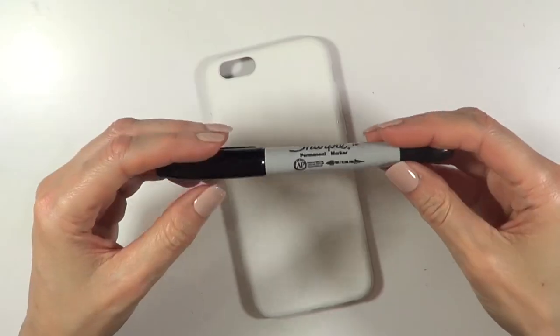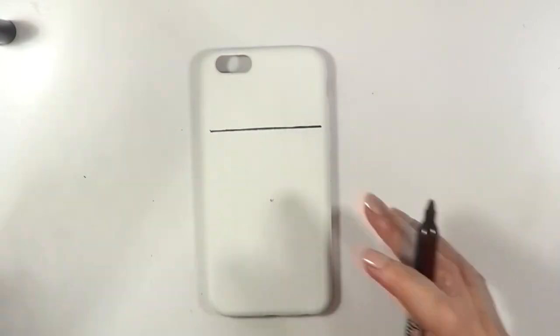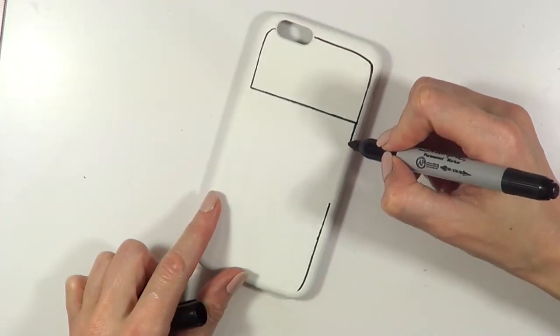I'm going to let it dry. I'm going to take a Sharpie and make a line with my ruler at one third of the whole phone case, and I'm just going to be covering the whole thing all the way around like so.